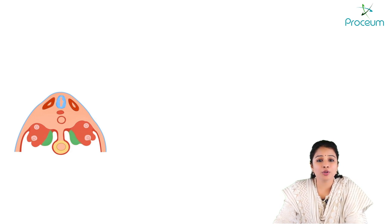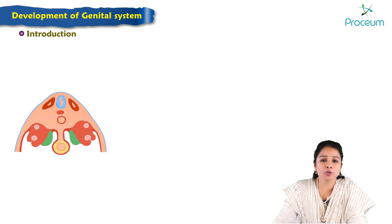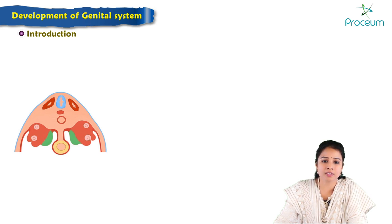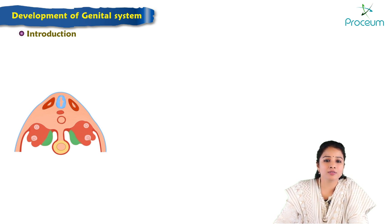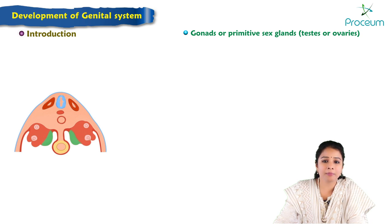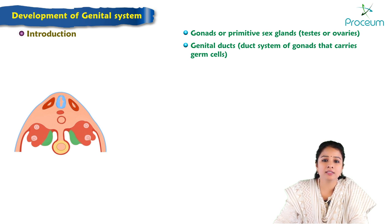In today's video I am going to explain the development of the genital system, which includes common changes happening in both males and females, and we would also discuss in detail the male reproductive system and the female reproductive system as well. The genital system consists of gonads or primary primitive sex glands, which are testes in males and ovaries in females, genital ducts, and external genitalia.